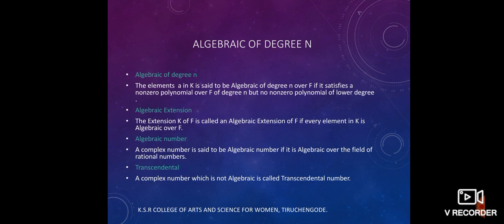Moreover, in algebraic numbers, the sum of two algebraic numbers is again an algebraic number. Also, the product and the quotients of two algebraic numbers are again algebraic numbers.